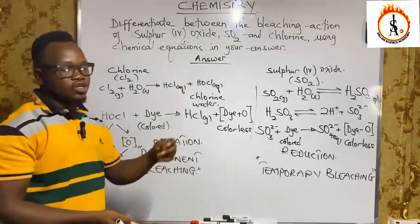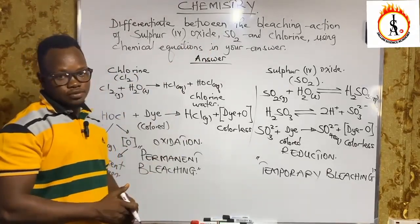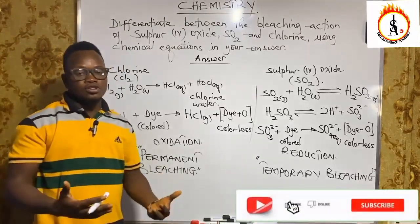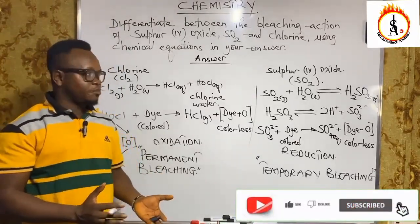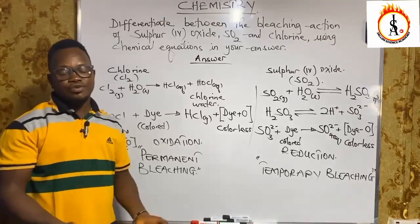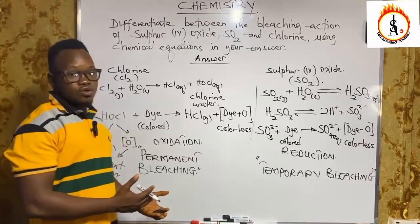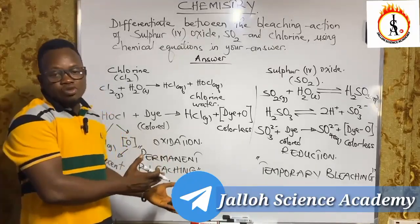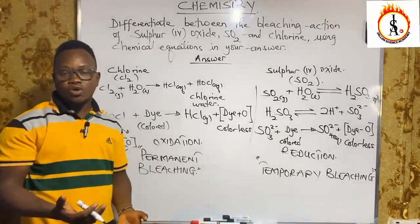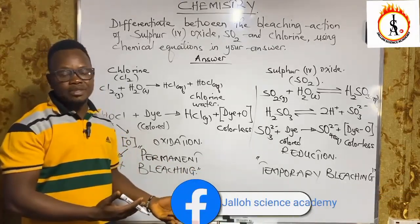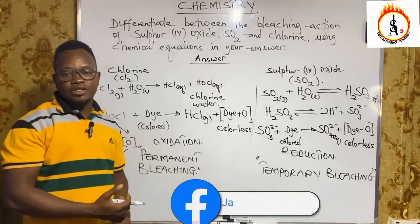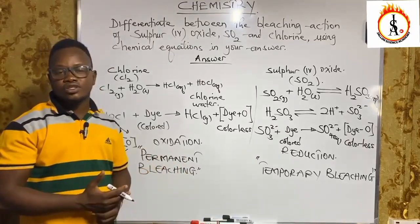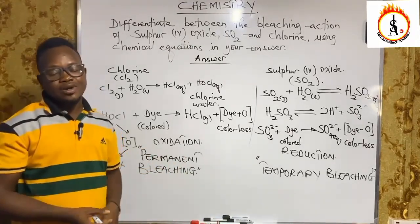These are the differences between the bleaching action of chlorine and the bleaching action of sulfur dioxide, along with the equations illustrating how each bleaching takes place. Thanks for watching. Please like the video, subscribe to the channel, hit the notification bell, and join the Jalo Science Academy study group on Telegram and the Facebook page. Keep sending in your questions — I'll always be available to answer them.